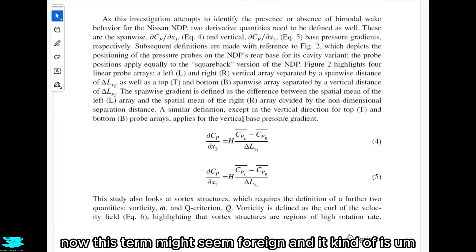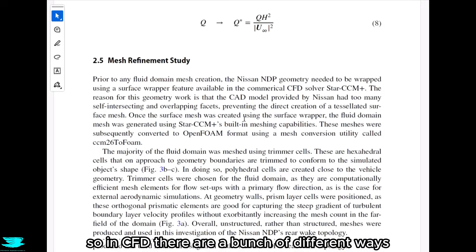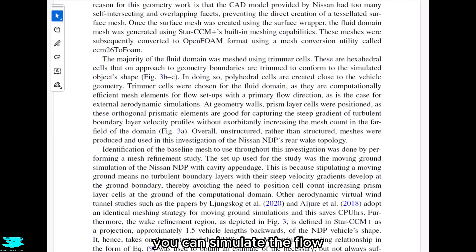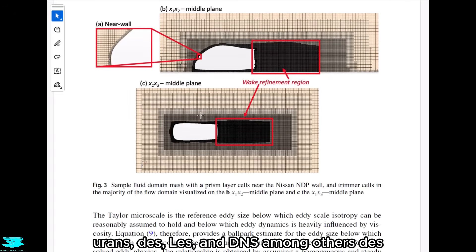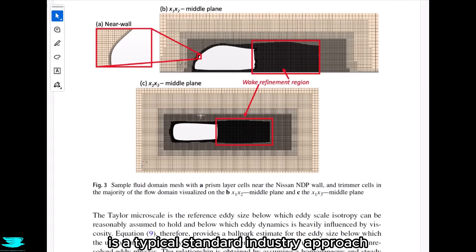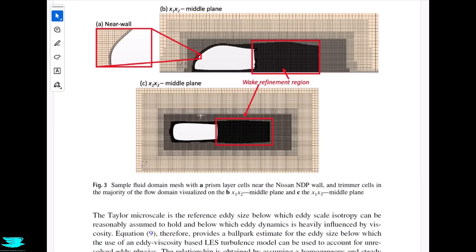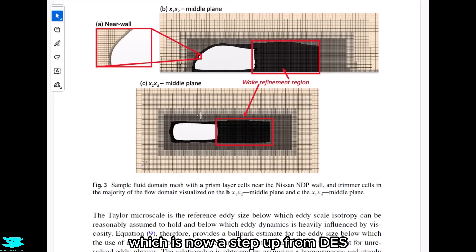That term might seem foreign. In CFD, there are a bunch of different ways you can simulate the flow: RANS, URANS, DES, LES, and DNS, among others. DES, which is a hybrid of URANS and LES, is the typical standard industry approach and gives quite good results. These authors are using WRLEs, which is a step up from DES.